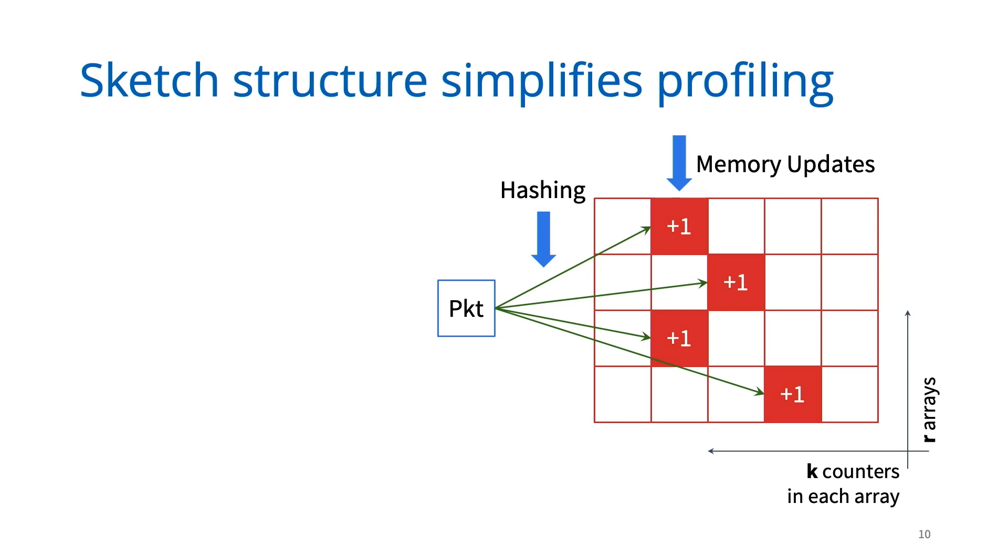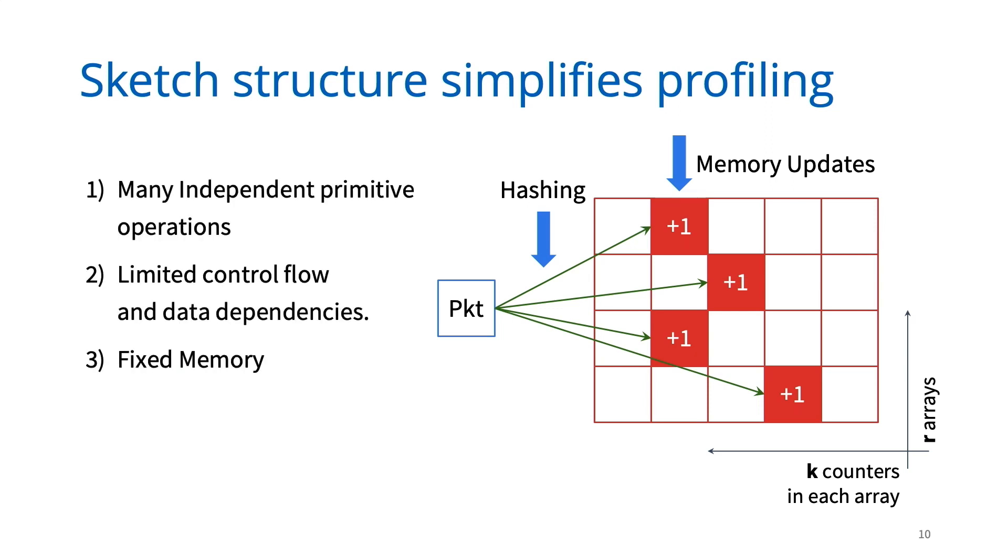With this structure, we observed that the operations for different rows are independent of each other. There's limited control flow and data dependencies. Further, sketches only use a fixed amount of memory. With these properties, we find that the performance of sketches is largely governed by the number of primitive operations, rather than any dependencies or locking.